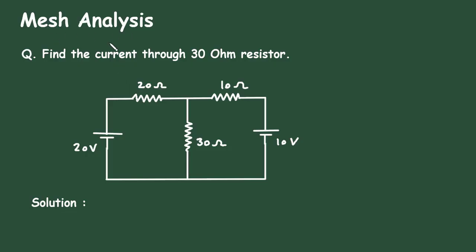Mesh analysis question: Find the current through the 30 ohm resistor. In this circuit we have to find the current through the 30 ohm resistor by using mesh analysis.